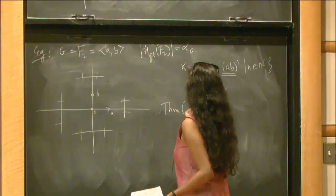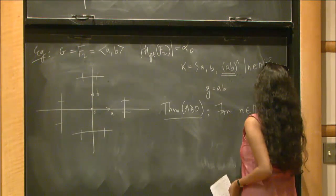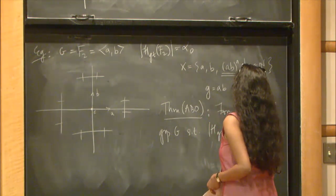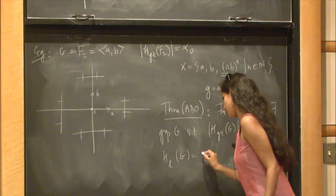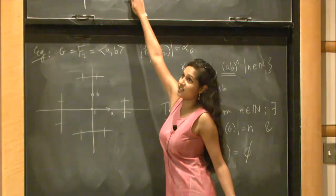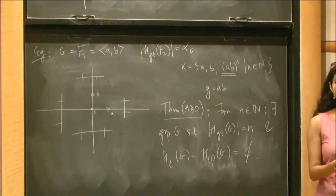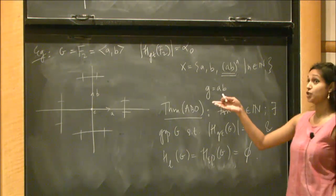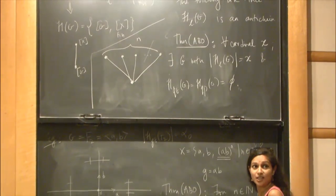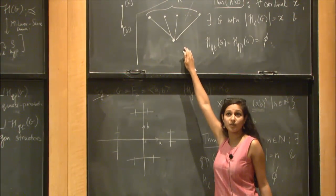The theorem we prove — which is very counterintuitive — is that for every natural number n there exists a group G with exactly n general type structures and no lineal or quasi-parabolic structures. In particular, its Hasse diagram consists of exactly n isolated general type structures connected only to the trivial structure. This also answers the isomorphism question: non-isomorphic groups can have identical poset structures for H(G), so we cannot distinguish such groups purely by looking at this poset.